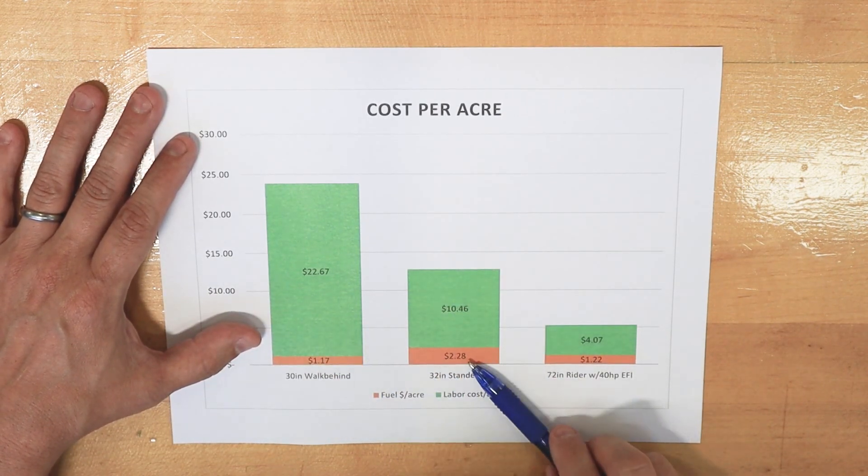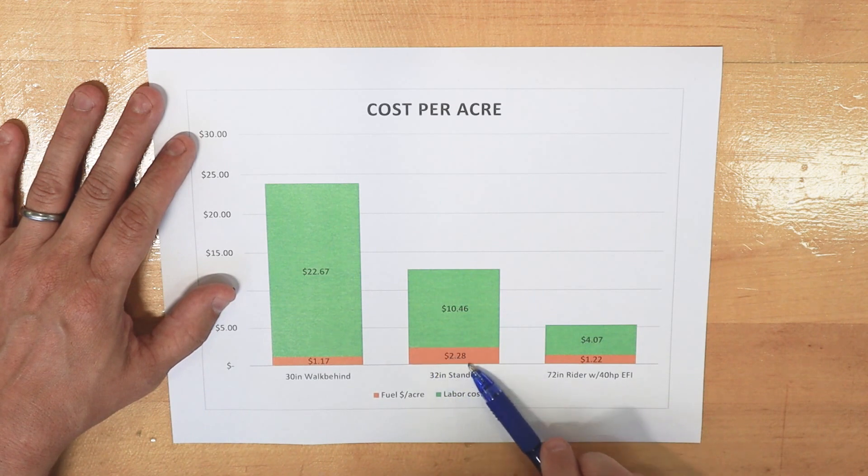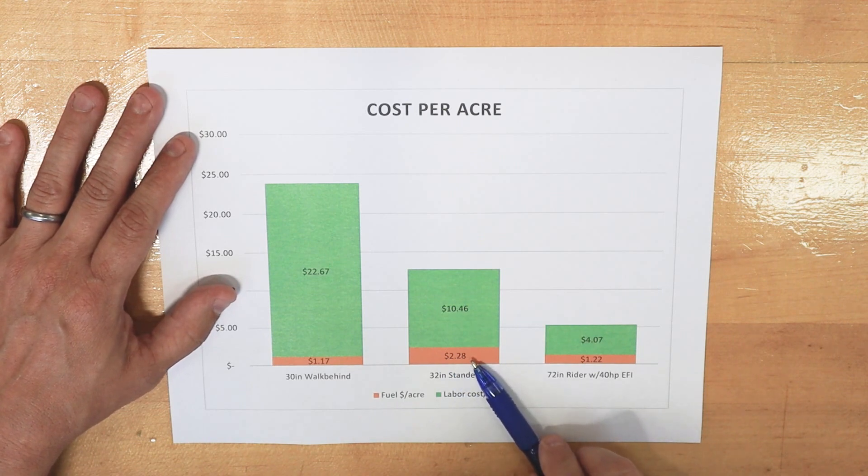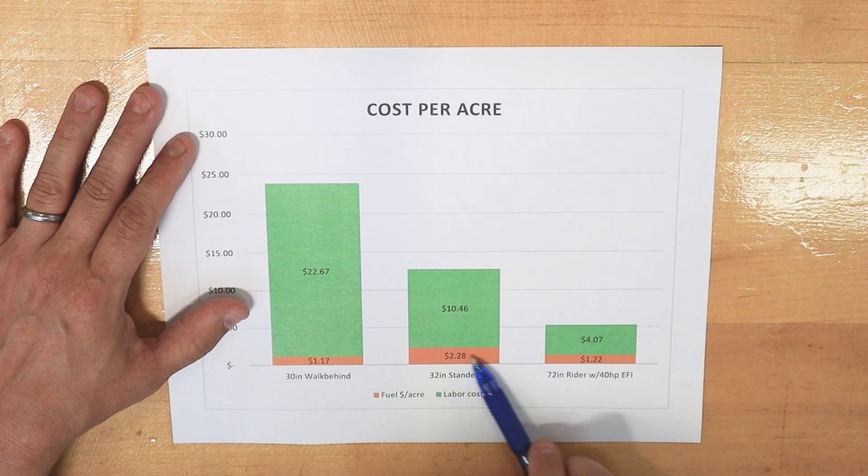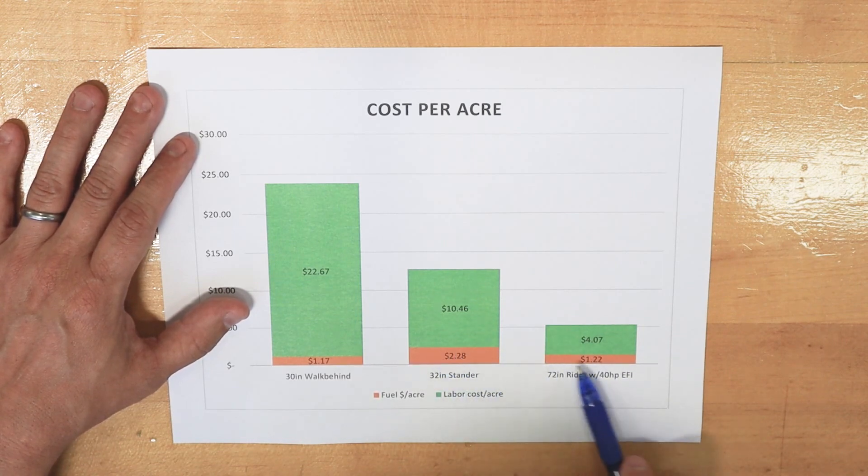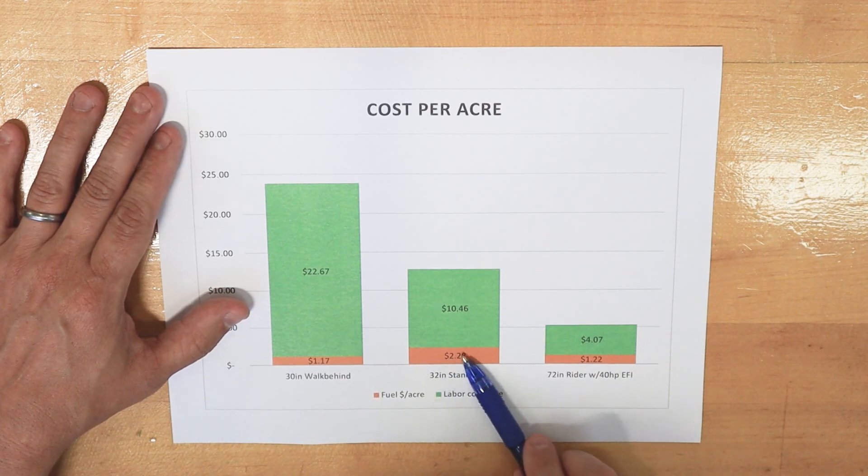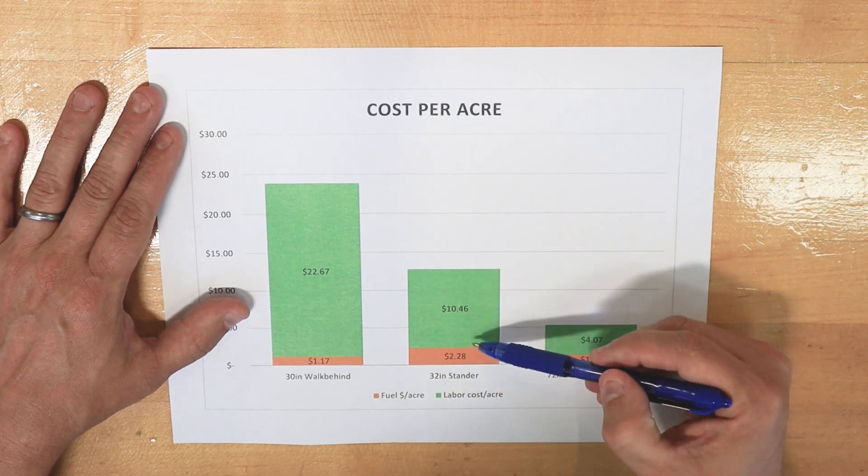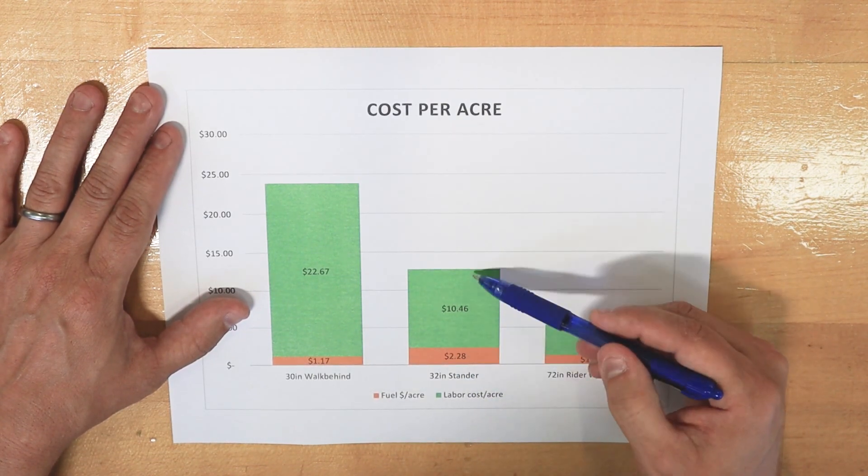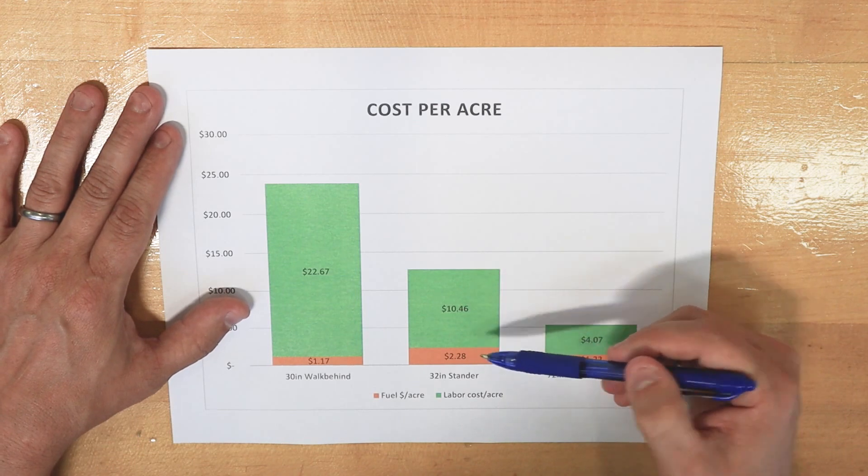Now, the 32-inch stander here, it consumed actually more fuel. You can see here that it consumed just under a gallon of fuel to cut that area. And I think a big factor here is that compared to the bigger mower, this engine is a carbureted engine. And so it's not as efficient as the fuel injected engine. And it's a rider, so it's going to consume a little more fuel just because of the weight and riding along. But we saved a huge amount of time on the labor to cut that area.